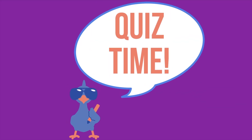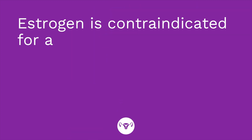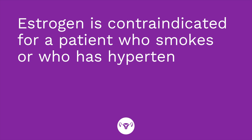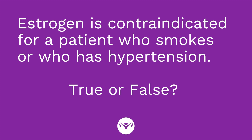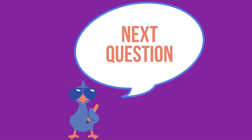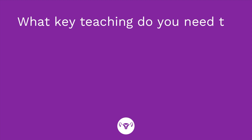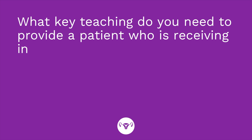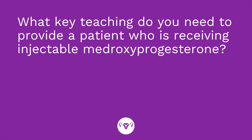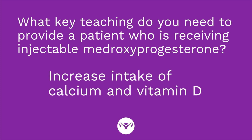Time for a quiz — I have three questions for you. Question one is true or false: estrogen is contraindicated for a patient who smokes or who has hypertension. The answer is true. Another contraindication is if the patient has an increased risk for blood clots or embolic events. Question two: what key teaching do you need to provide a patient who is receiving injectable medroxyprogesterone? The answer is you need to teach that patient to increase their intake of calcium and vitamin D to prevent bone loss.